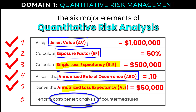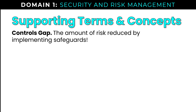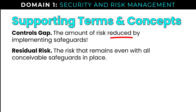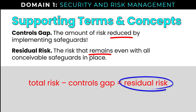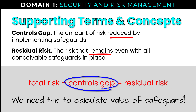Now we need to look at cost-benefit analysis — step six. This step is called out in the official study guide but is left out in virtually every discussion of quantitative risk analysis in CISSP articles and courses online. Two supporting terms: the controls gap is the amount of risk reduced by implementing safeguards — the amount of money we're going to save. The residual risk is the leftover risk we can't eliminate through safeguards — money we have to come out of pocket with in a recovery scenario. So: total risk minus controls gap equals residual risk.